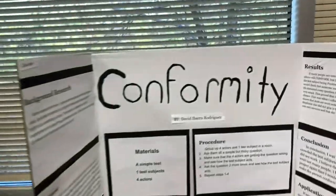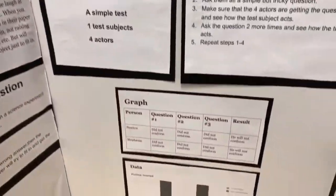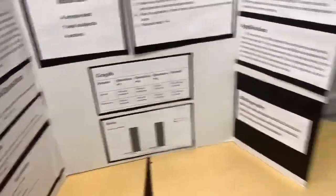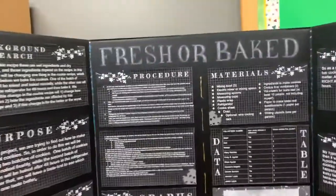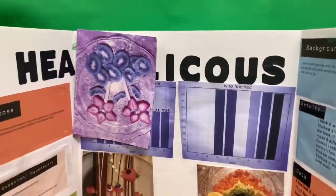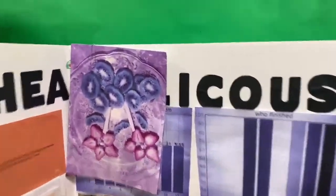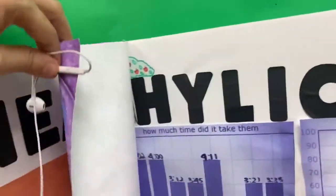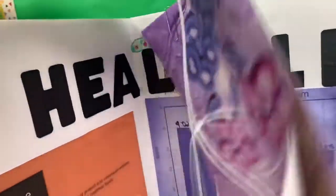Up next we have 'Conformity,' which sounds like an interesting project. Then 'Fresh or Baked' — got some data tables and charts. Following that is 'Healthy-licious.'